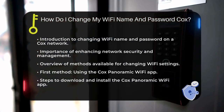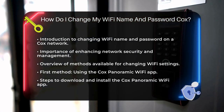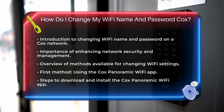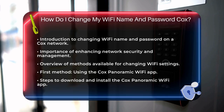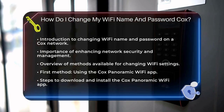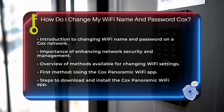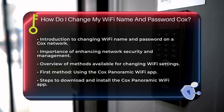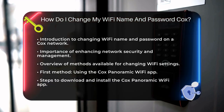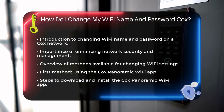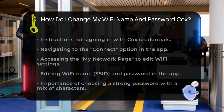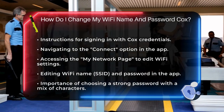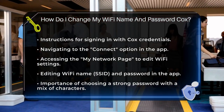Once you've installed it, open the app and sign in using your Cox credentials. After you're logged in, navigate to the Connect option at the bottom of the screen, which will take you to the Network Selection page. From there, tap on your network name and you'll be taken to the My Network page.